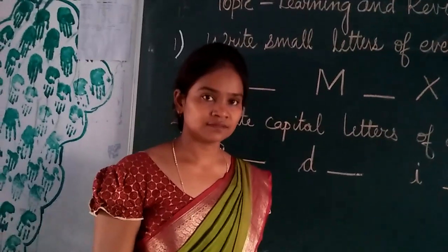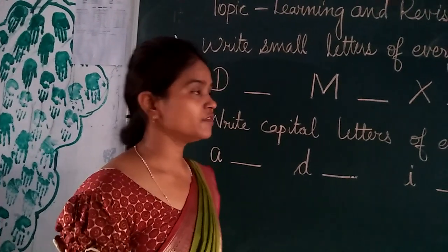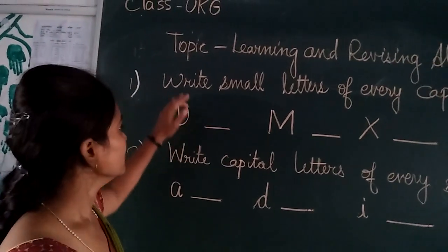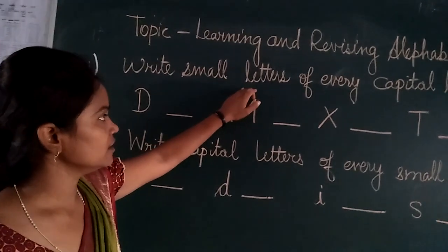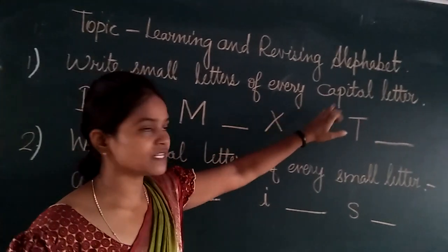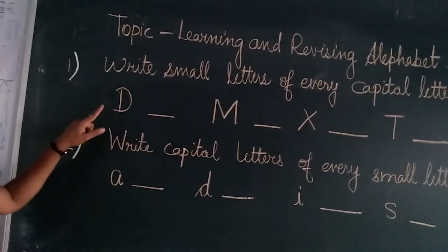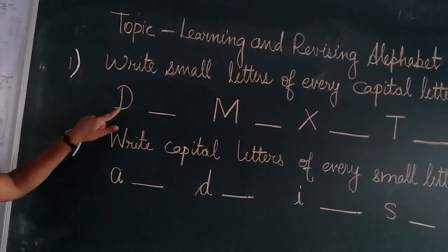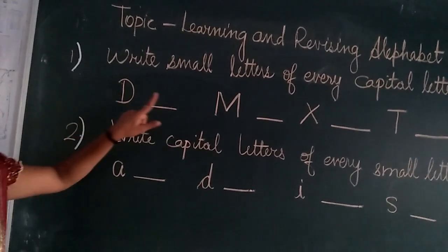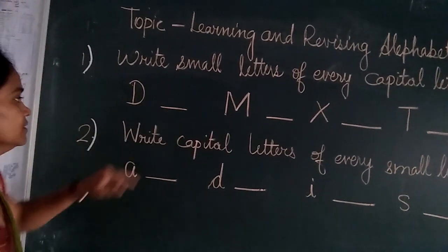Now my dear students, we will do the exercise. Write small letters for every capital letter. Capital D — we will write small D.